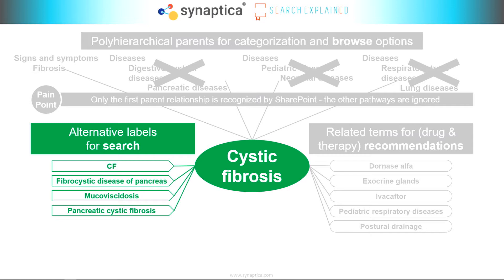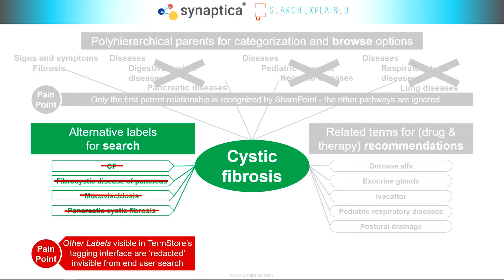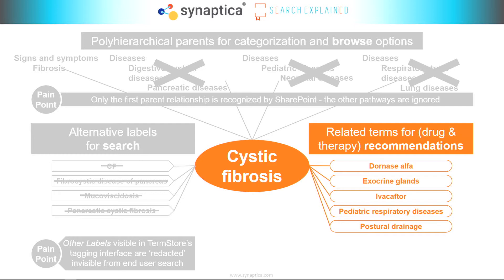Let's move on to synonyms — alternative label synonyms. Cystic fibrosis may be known to people through other phrases, other labels. What happens when these come into SharePoint is this: they are recognized as other labels — that's the SharePoint term, 'other labels' in TermStore — and they are visible to the tagging system. But they are effectively redacted when it comes to end-user search. They simply are no longer visible to end-user search. Second pain point. Again, a major one.